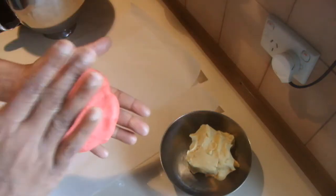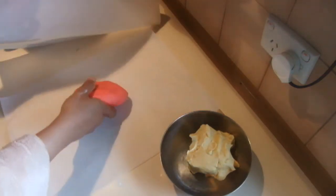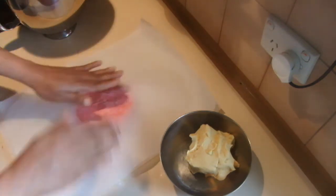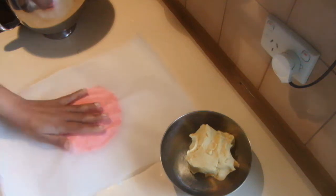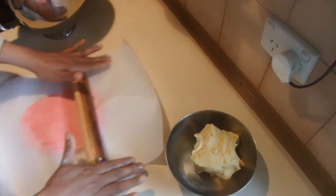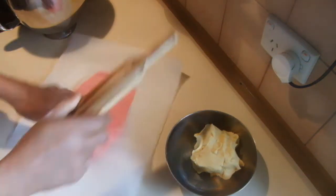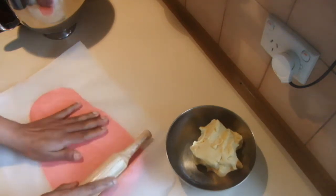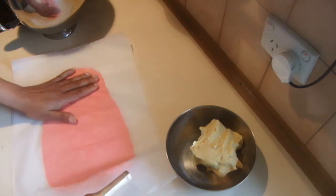Put it between the baking sheets, press it down, and take a rolling pin. Roll it to the size you like, in a square shape, not round.